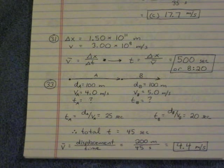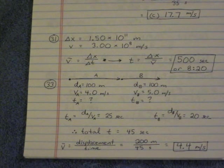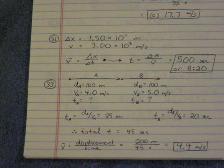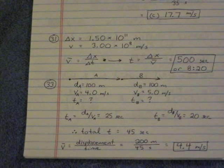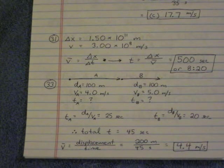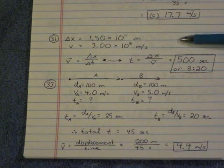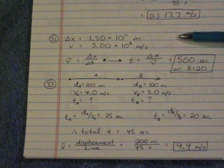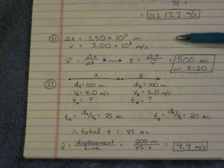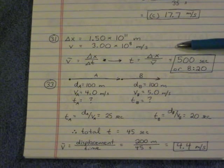Number 31, we have a displacement of 1.5 times 10 to the 11th meters. That's something you can look up in the back of the book, the distance from the Earth to the Sun. Speed of light is 3 times 10 to the 8th meters per second.